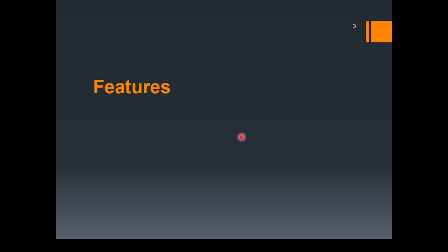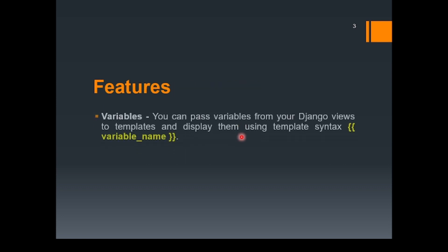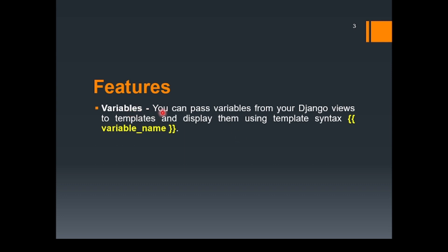Now let's discuss about the features. The first feature is variables. You can pass variables from your Django views to templates and display them using the template syntax. These curly braces are called interpolation. So if you want to fetch the value of a variable from your function onto your template, you will be using the variables inside the curly braces.